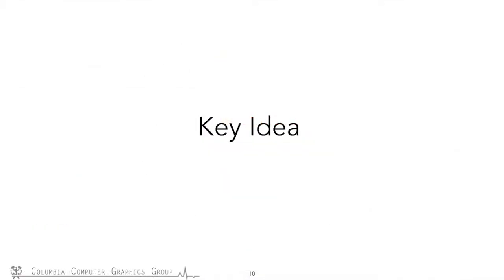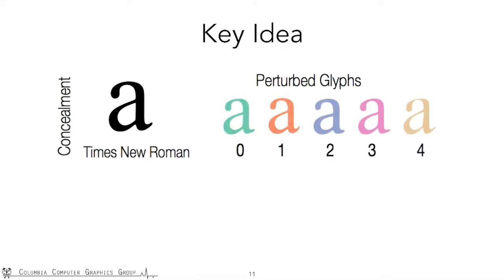We are able to address all these problems, and here's our key idea. Instead of changing the whole font or tweaking the font size, we slightly perturb the shape of a single character. We use the term 'glyph' to refer to the shape of a character. At encoding time, we perturb the glyph in a human non-obtrusive, yet machine-readable way.